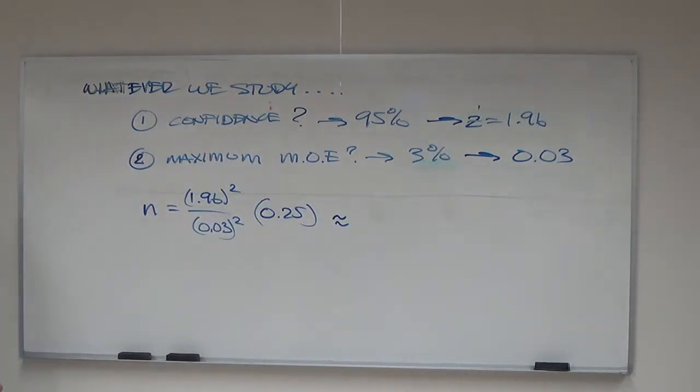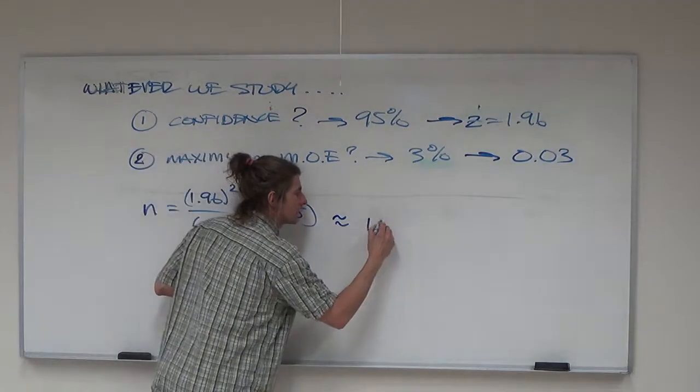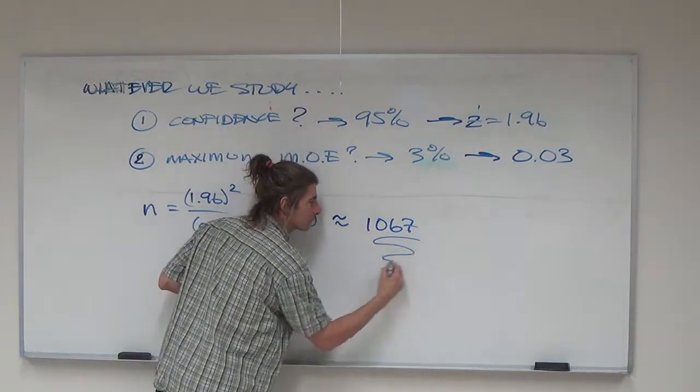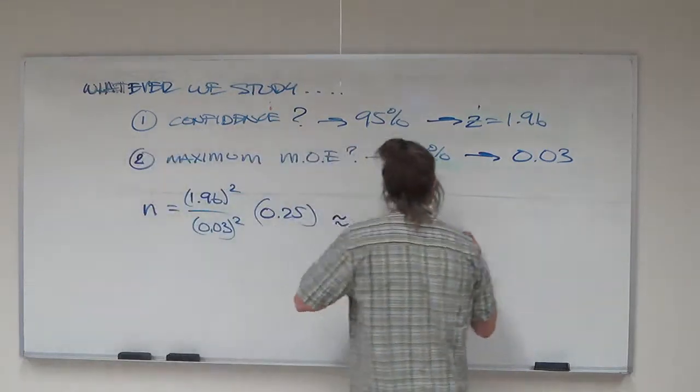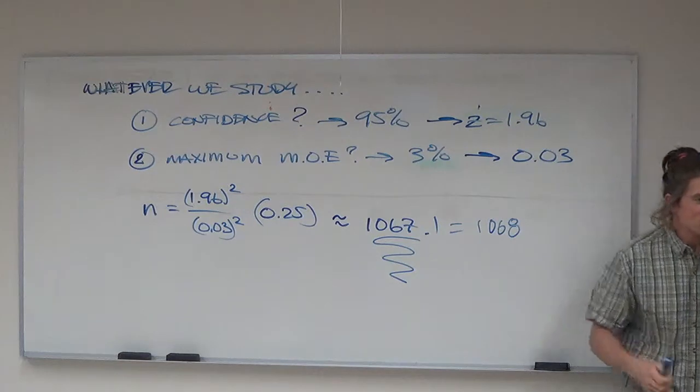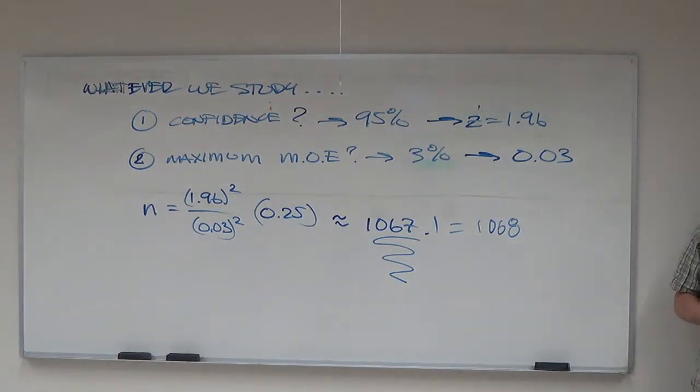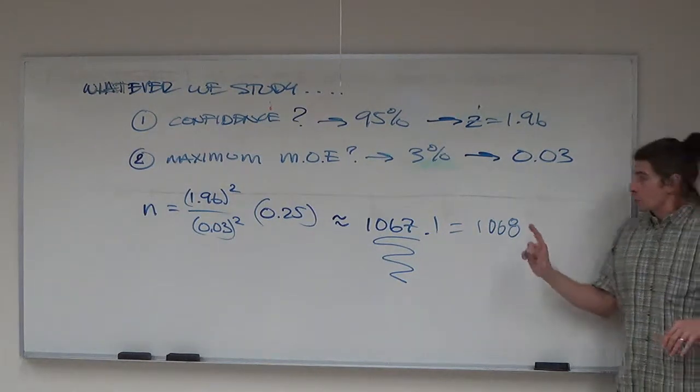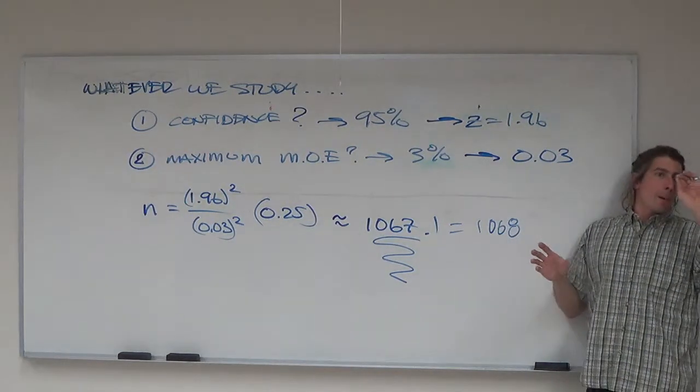1,067. Boom! 1,067. .1. Oh, .1? I like that. So, what I'm going to do is I'm going to call that 1,068. Now, this is going to be kind of weird. Because you can't have .1 of .1. Right. You can't sample .1 of a person or .1 of an object. So, you have to round, obviously. But here's the problem.